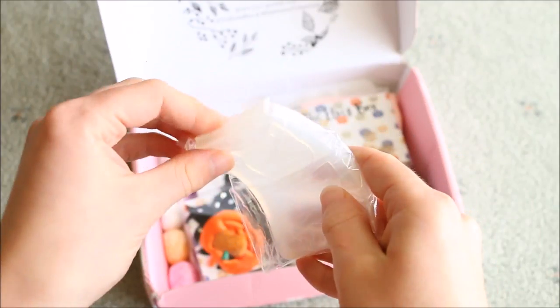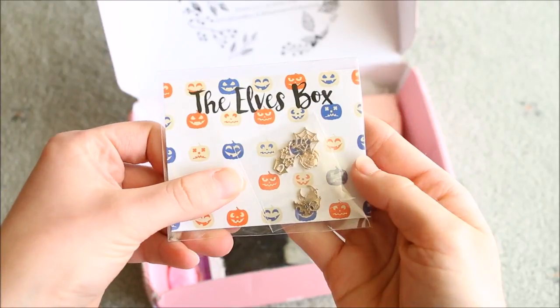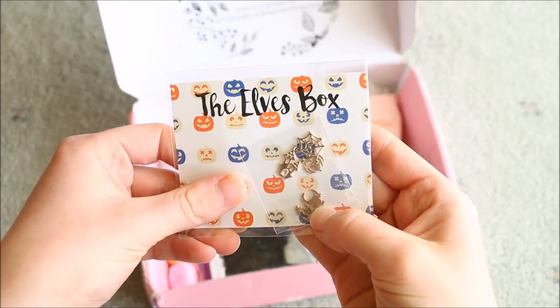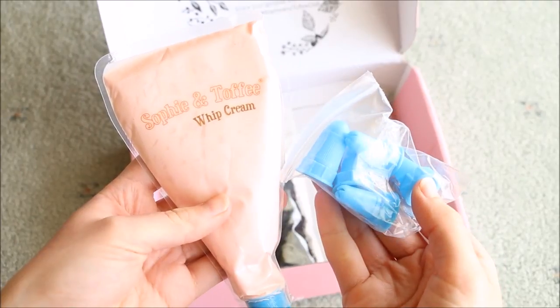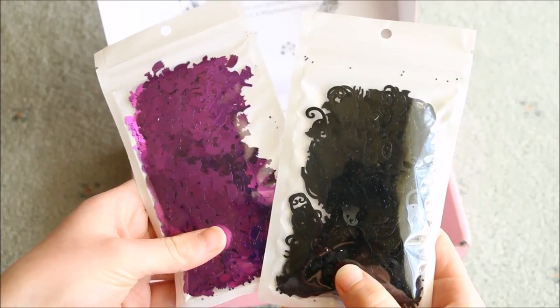Also included are a gold trinket case, a flexible cat shaker mold, Halloween fabric pieces, gold metal embellishments, deco whip and some piping tips, and finally some Halloween sequins.